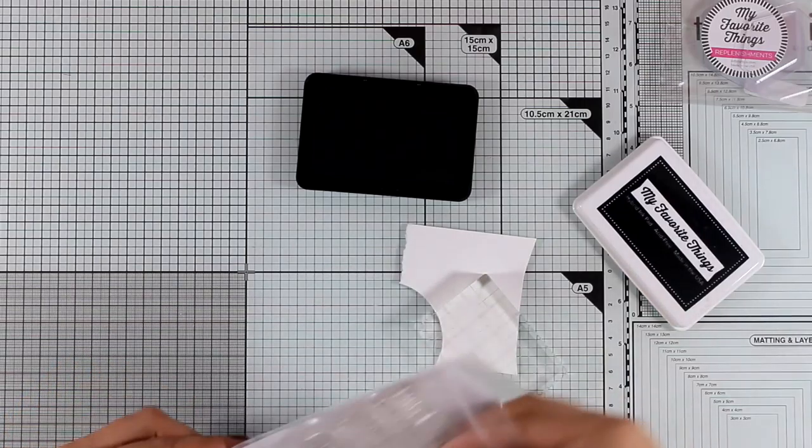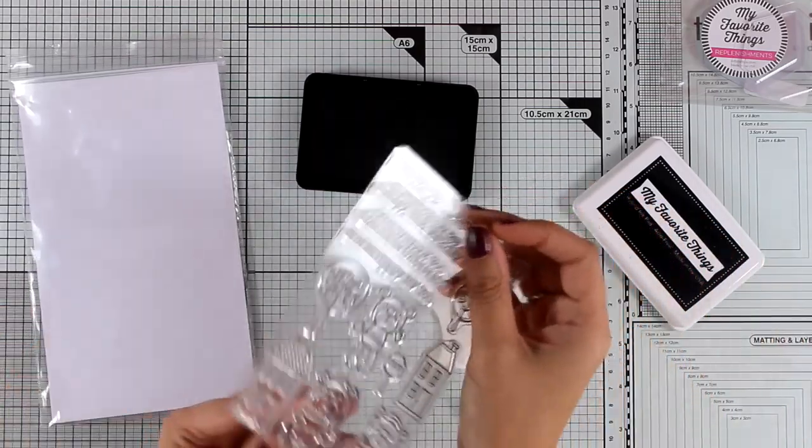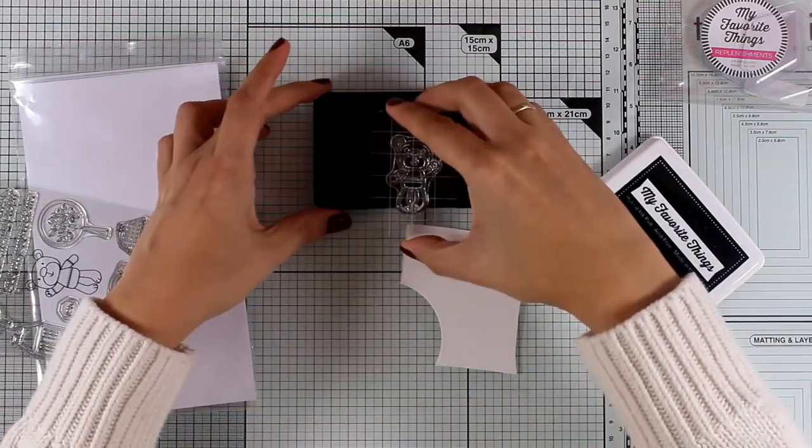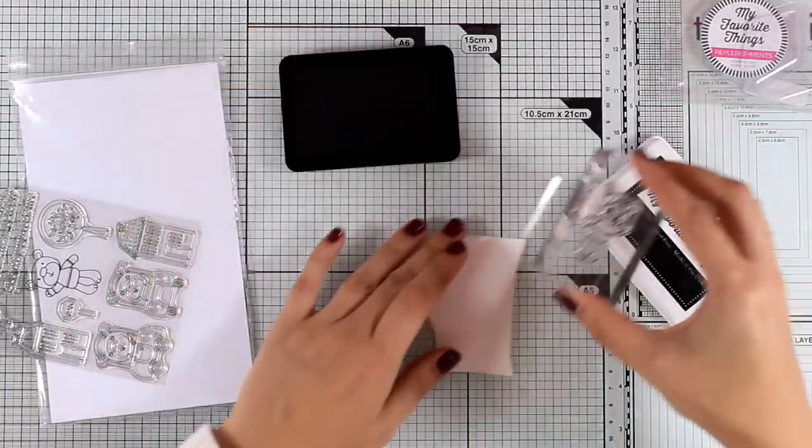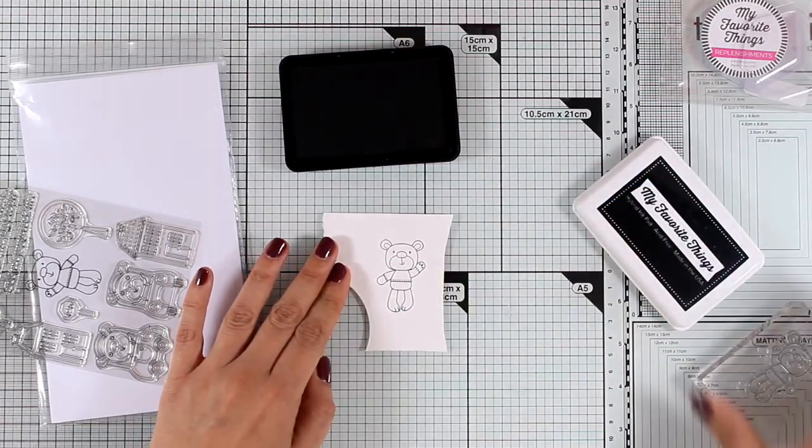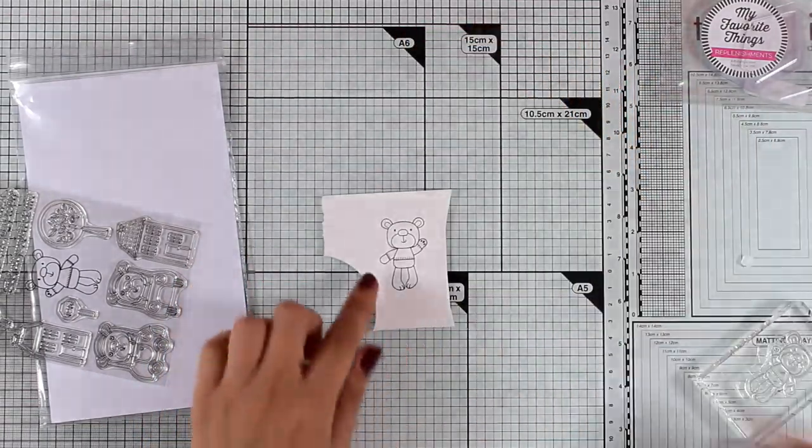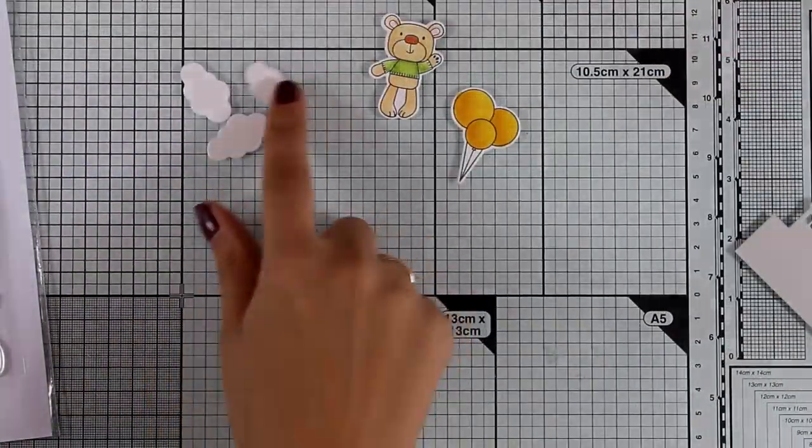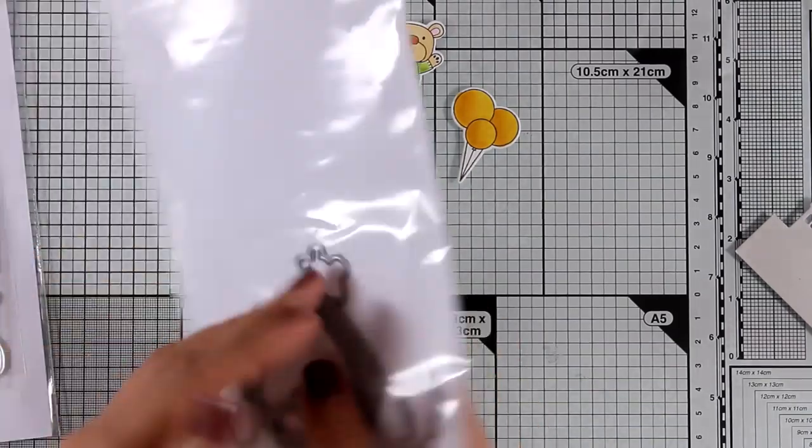For the last card I'm using the 'berry town' stamp set and it comes with lots of little bears as well as houses and trees and you can pretty much create a little town. In this case I'm going to do something completely different. Just because this little guy has his hand raised I thought it would be fun to give him balloons to hold.